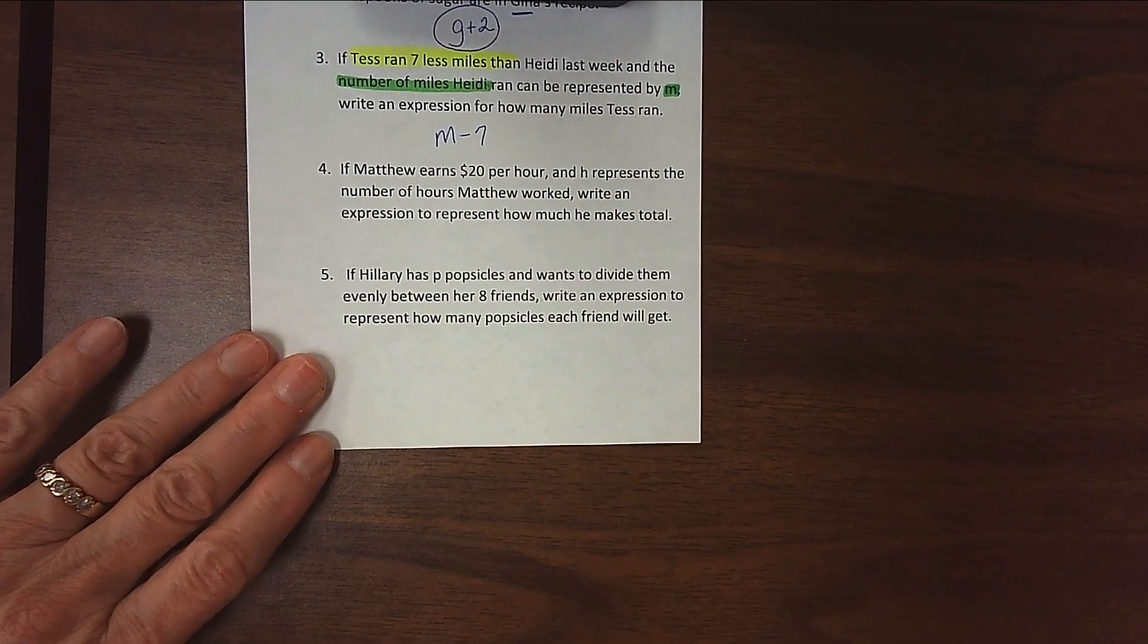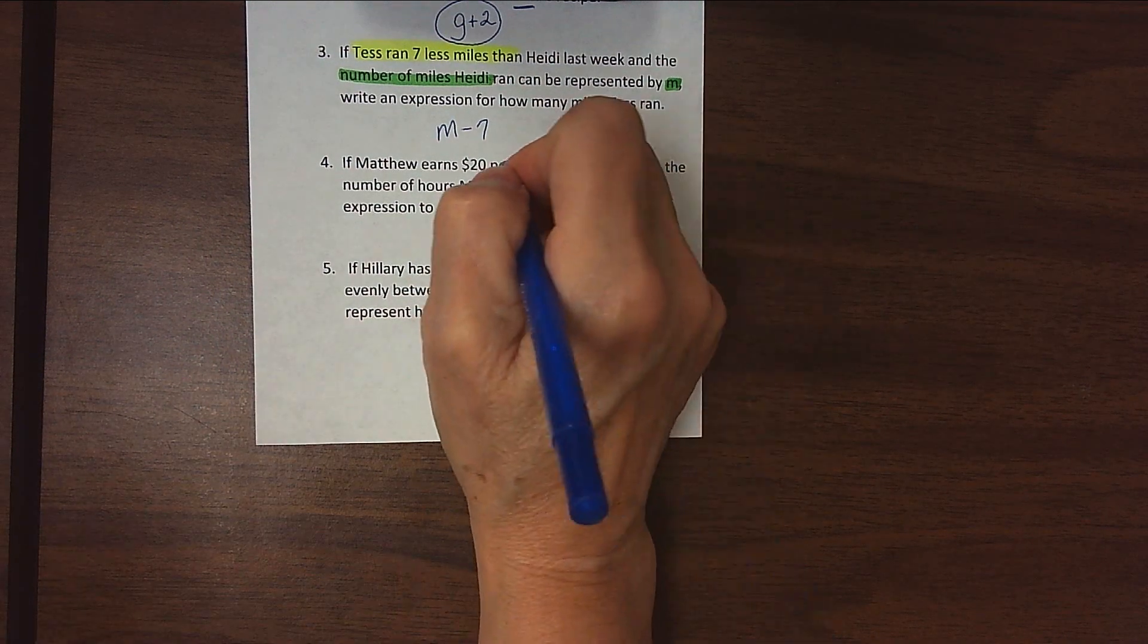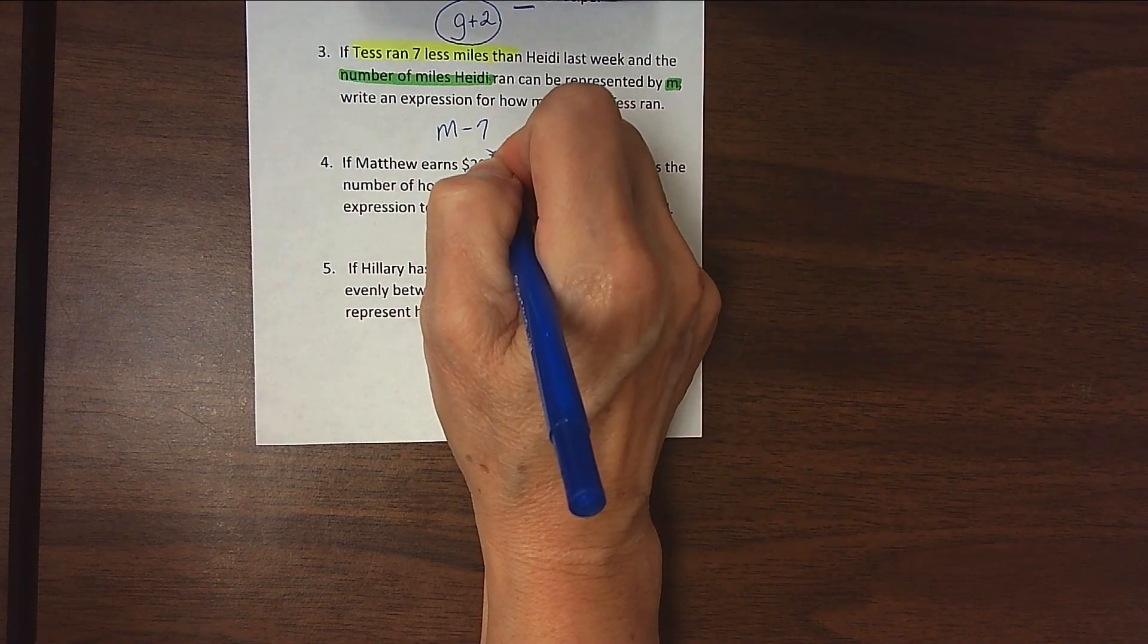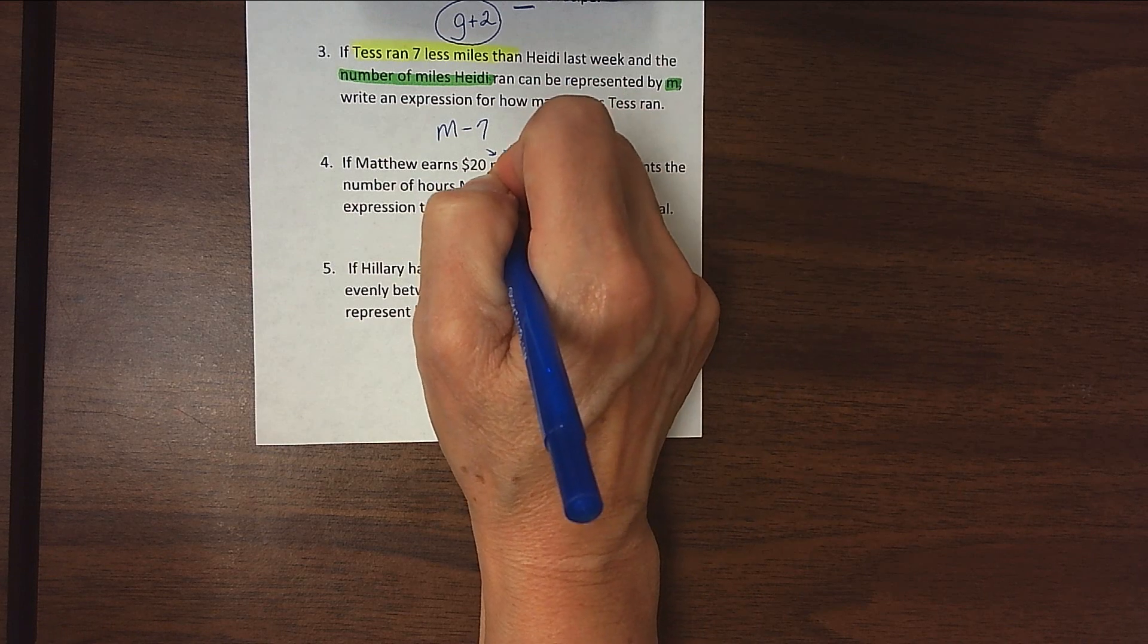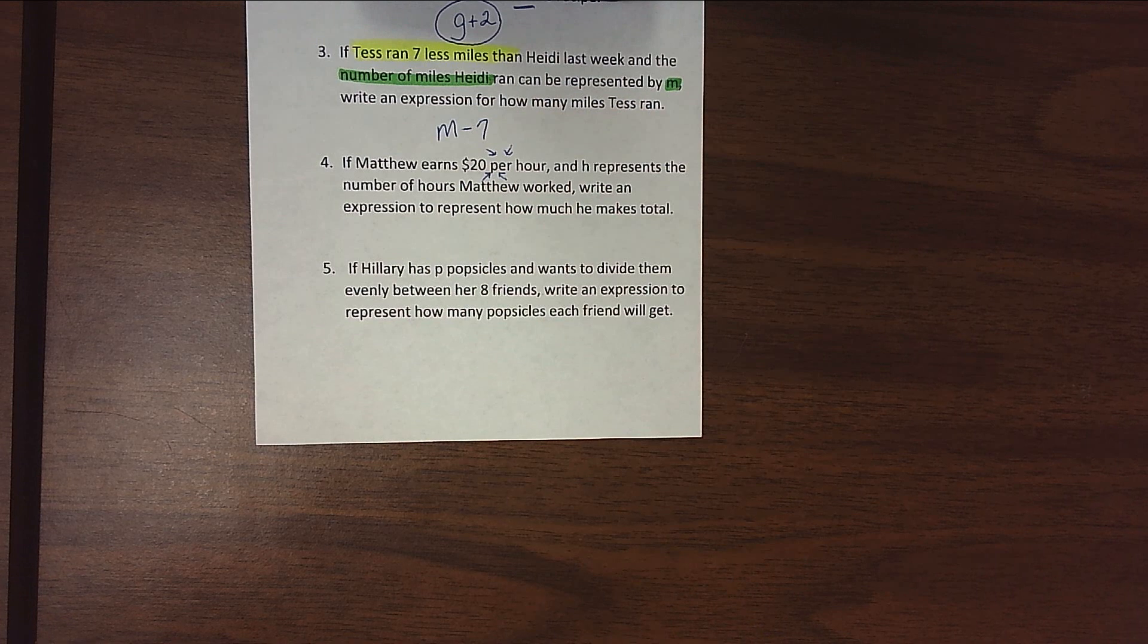All right, number four. If Matthew earns $20 per hour, boy, any time I see this word 'per', I want to think multiplication, okay? All right, or division.